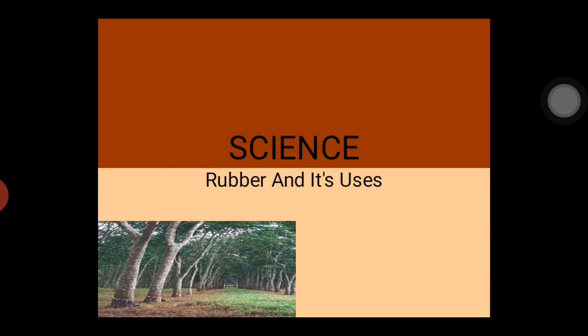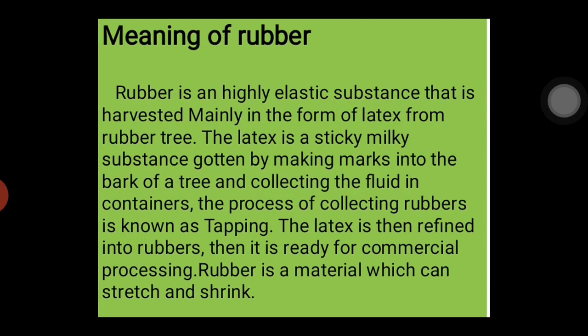Let's look at the meaning of rubber and what it is used for. Rubber is a highly elastic substance that is harvested mainly in the form of latex from rubber trees. That means we have trees where we get rubber from.